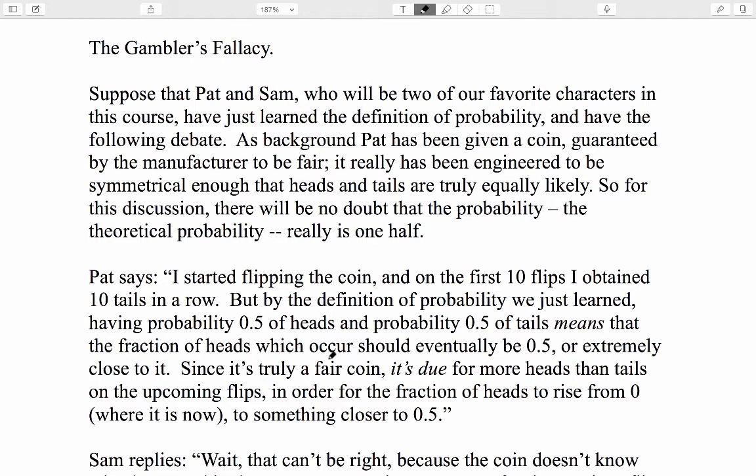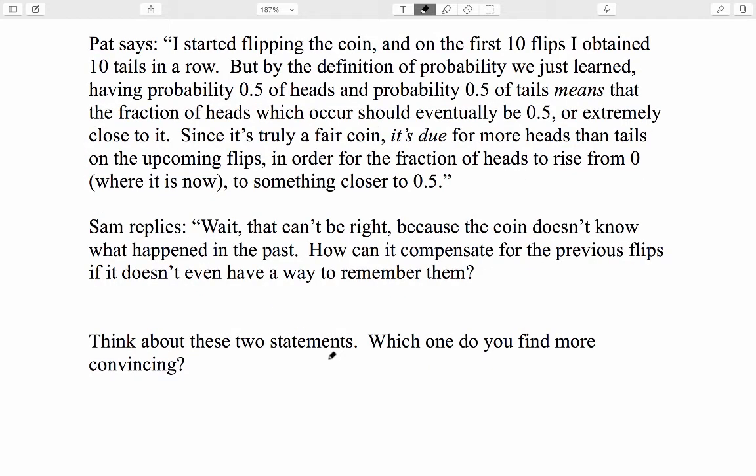Now that we've thought a bit more carefully about what we mean by probability, let's address an important misconception called the gambler's fallacy. And it's not just gamblers who commit the fallacy, but many gamblers do. Let's suppose that Pat and Sam, who will be two of our favorite characters in this course, have just learned the definition of probability and have the following debate. As background for this debate, Pat has been given a coin guaranteed by the manufacturer to be fair. It really has been engineered to be symmetrical enough that heads and tails are truly equally likely. So for this discussion, there will be no doubt that the probability of heads, the theoretical probability of heads, really is one half.